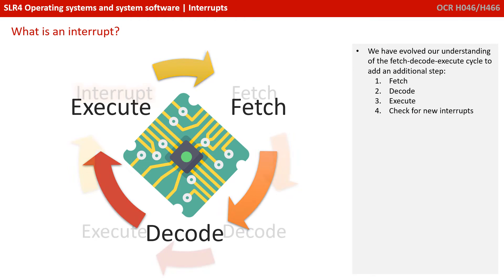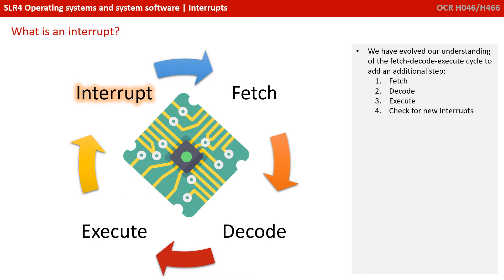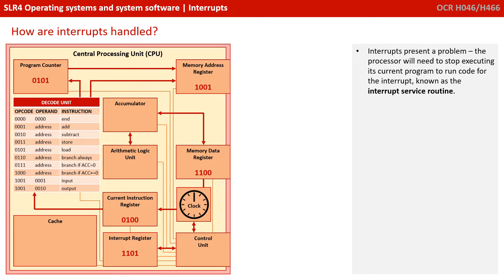We can evolve our understanding of the fetch, decode, execute cycle to include an additional step: fetch, decode, execute, and then check if there are any new interrupts to be handled. Interrupts present us with a bit of a problem — the processor will need to stop executing its current program to run the code for the interrupt, known as an interrupt service routine.